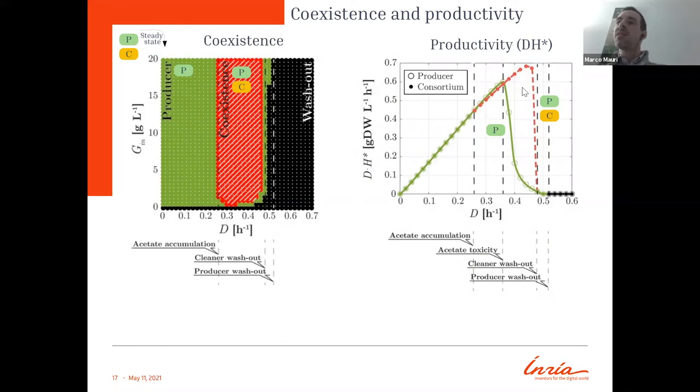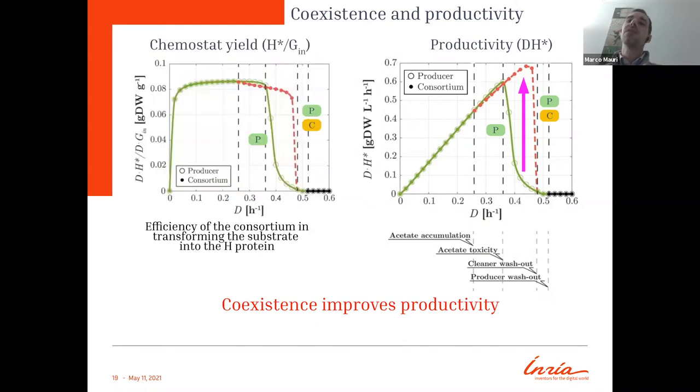When we have acetate in the system and there is coexistence, we see that productivity of the consortium is much higher than productivity of the sole producer. And that happens because the cleaner takes out acetate, and so the producer can grow better and produce also much more H protein. So in this case, we can improve productivity. But there is a drawback actually.